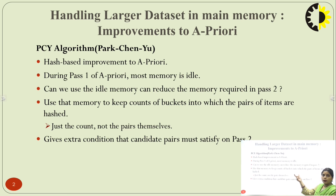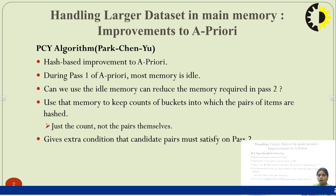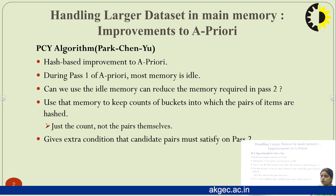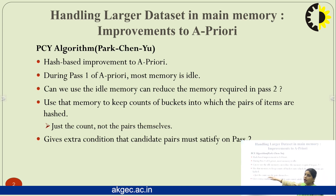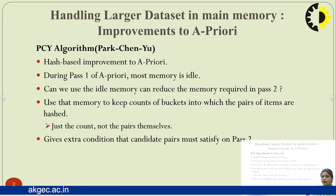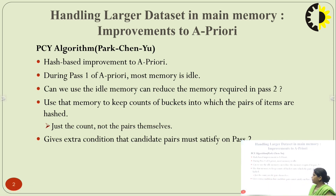The idea is to use that idle memory to keep counts of buckets into which pairs of items can be hashed — just counts, not the pairs themselves. That memory which is idle during pass 1 of a-priori is used only to keep counts of the buckets into which pairs of items are hashed. Then we give an extra condition that a candidate pair must satisfy in pass 2.